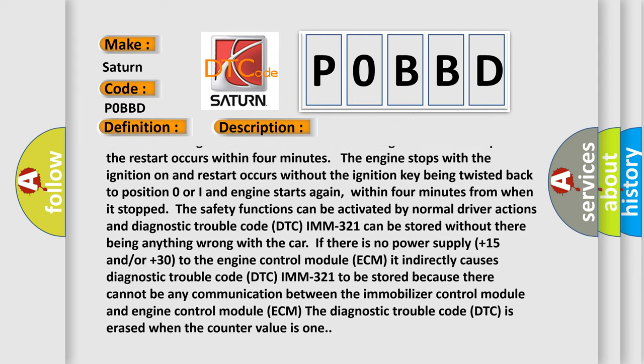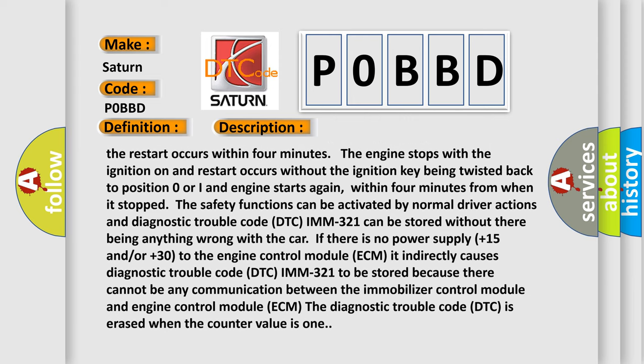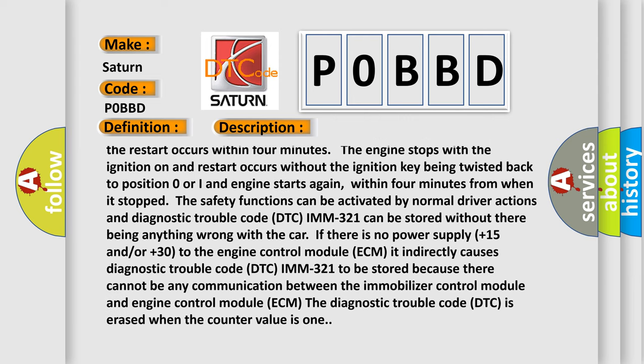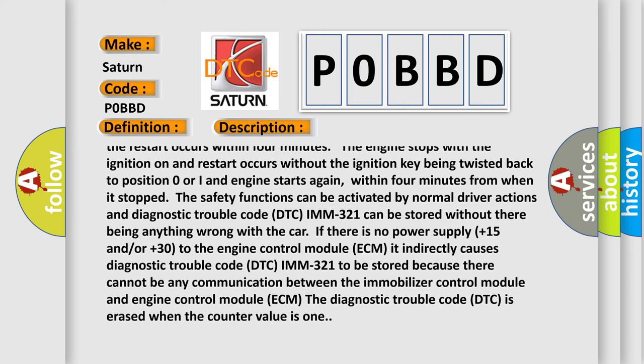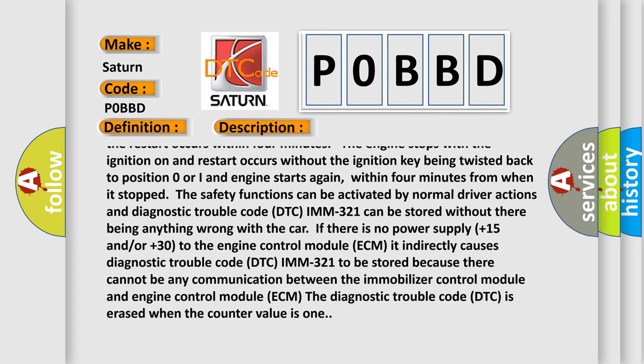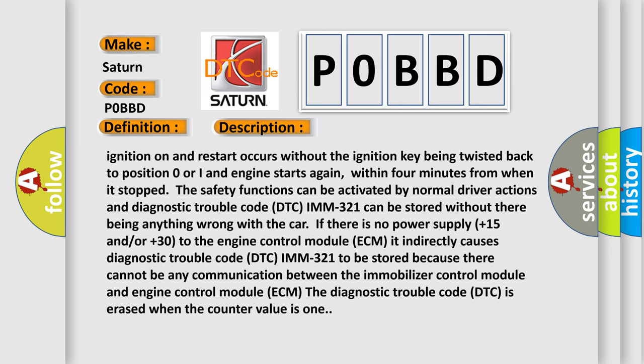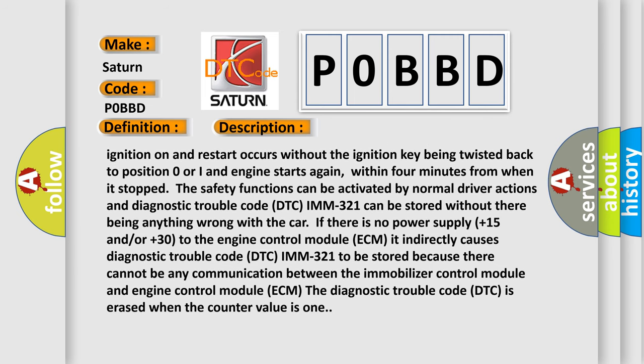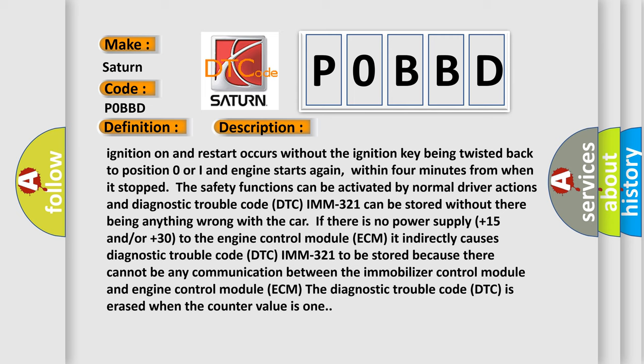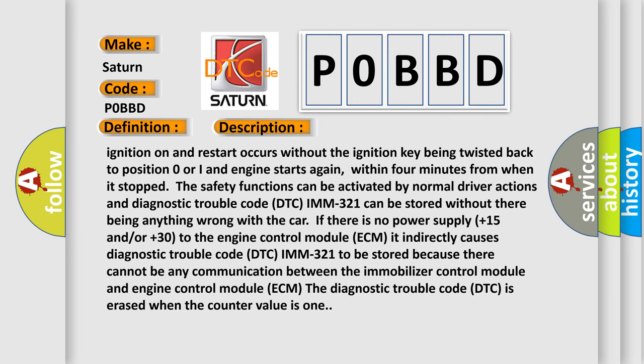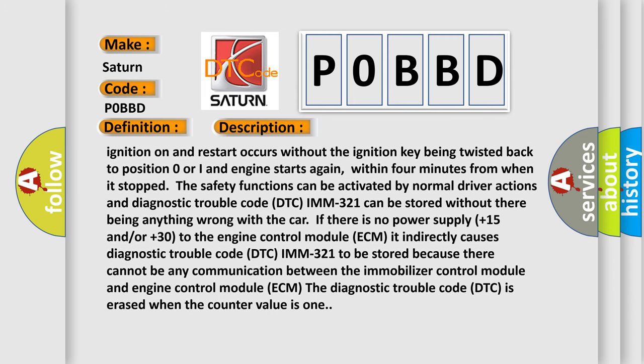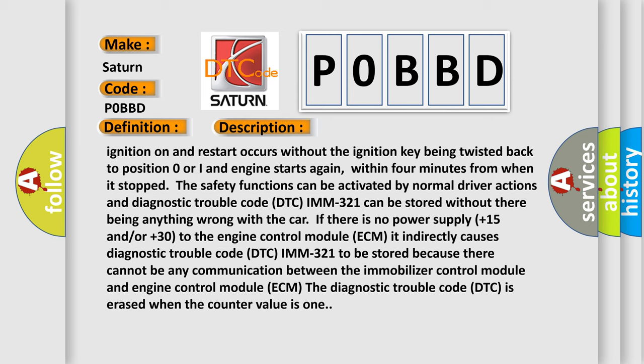If there is no power supply plus 15 and/or plus 30 to the engine control module ECM, it indirectly causes diagnostic trouble code DTC IMM-321 to be stored because there cannot be any communication between the immobilizer control module and engine control module ECM. The diagnostic trouble code DTC is erased when the counter value is 1.